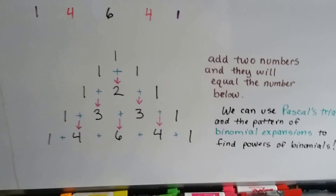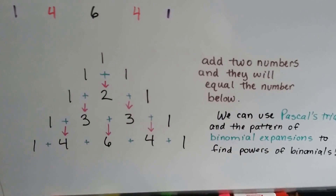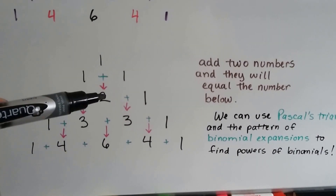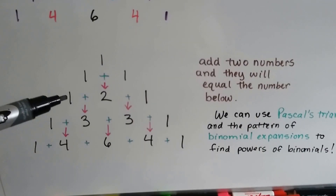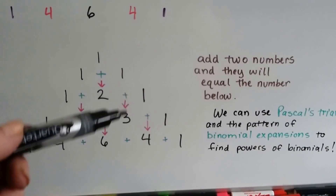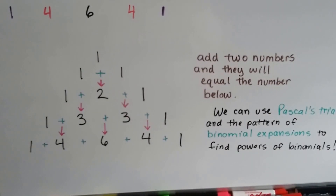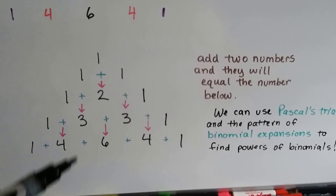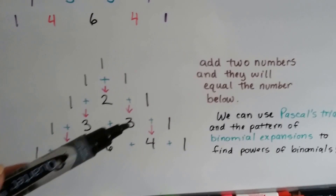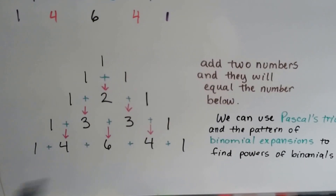The way Pascal's Triangle works is you add 2 numbers and they equal the number below. So if you add this 1 and this 1, it's going to equal that 2. And if you add this 1 and that 2, it's going to equal that 3. And that 2 and that 1 equals that 3. And that 1 and that 3 equals that 4. That 3 and that 3 equals that 6. That 3 and that 1 equals that 4. And we could continue this triangle on.